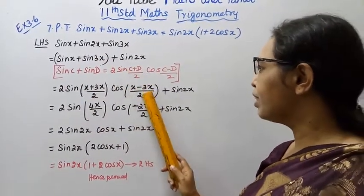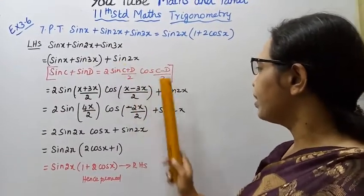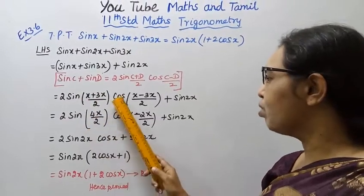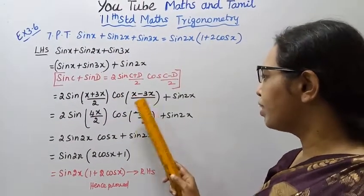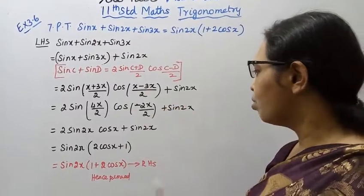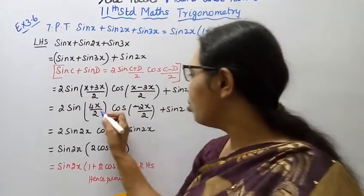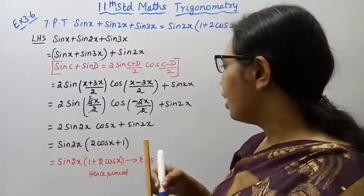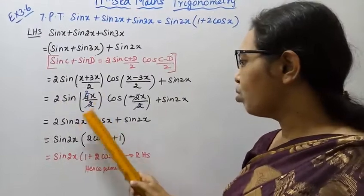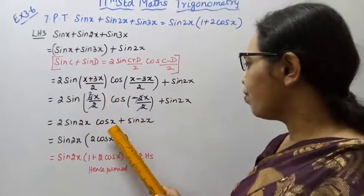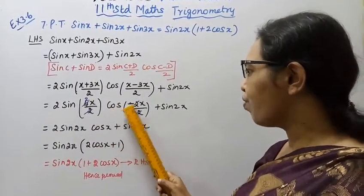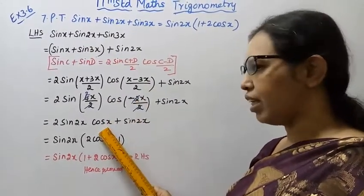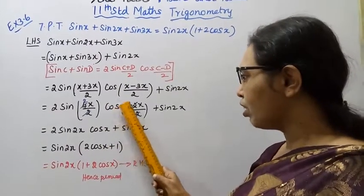This becomes 2 sin x plus 3x by 2 cos x minus 3x by 2 plus sin 2x. That's 2 sin 4x by 2 cos minus 2x by 2 plus sin 2x. Simplifying: 2 sin 2x cos minus x plus sin 2x.